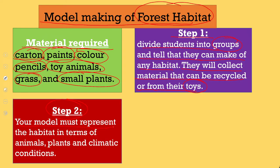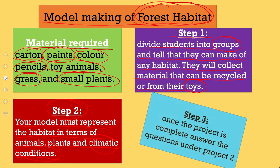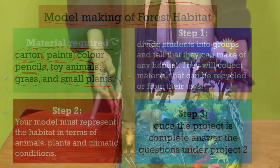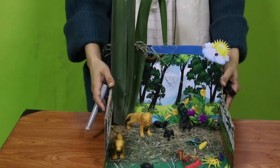Step number two: your model must represent the habitat in terms of animals, plants, and climatic conditions. In a forest habitat, we will show different plants and animals, and we will also show the climatic conditions of that habitat.